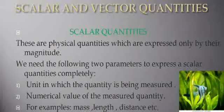Scalar quantities are physical quantities which are expressed only by their magnitude. We need two parameters to express scalar quantities completely: first, the unit in which the quantity is being measured — for example, if you measure milk, you should have liters — and second, the numerical value of the measured quantity, like 3 or 4 in 3 kilometers or 4 kilometers. Scalar quantities can be added, subtracted, multiplied, and divided by simple arithmetic methods.